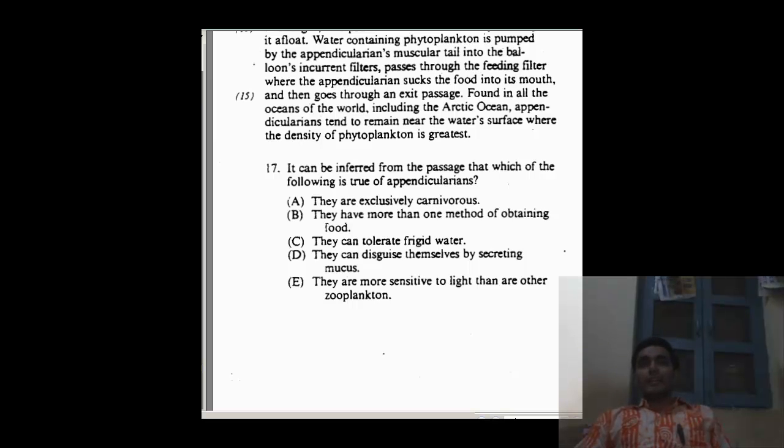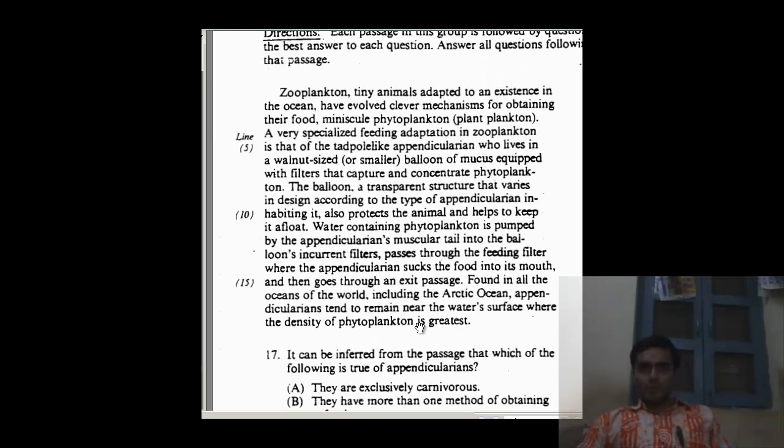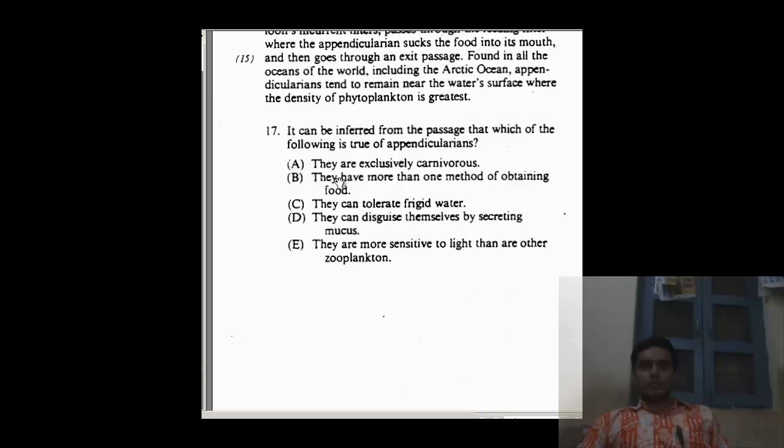C, they can tolerate frigid water. Now look at this, found in all oceans including Antarctic Ocean. C seems fair enough. They can disguise themselves by secreting mucus. They are more sensitive. No, light is not talked about. They have more than one method of obtaining food - a very specialized food. So this also goes out.